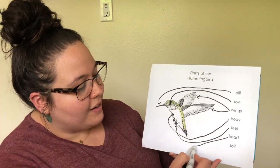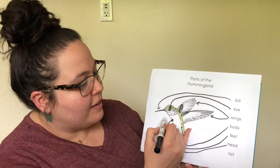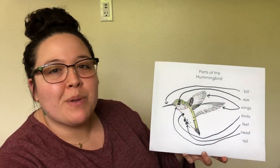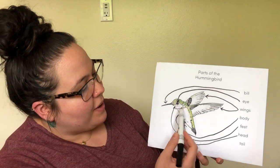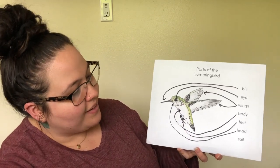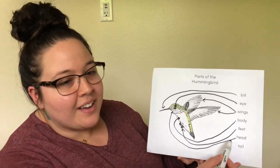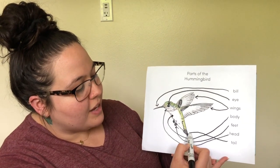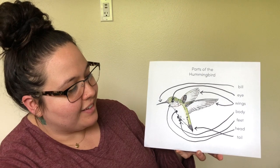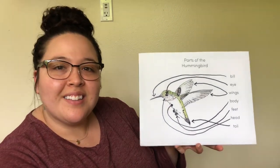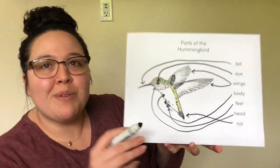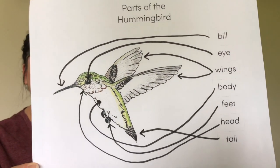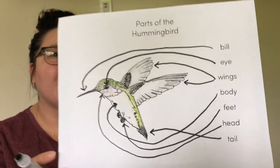Our next part is the head — there's the head right here. The head of the hummingbird is the part that has the eye and the bill attached to it. And then we have the tail — there's the tail of the hummingbird.